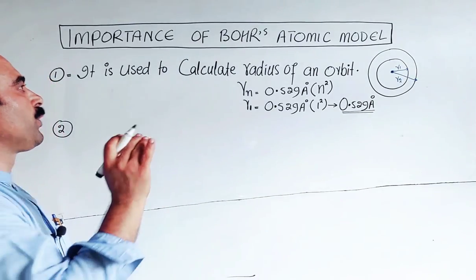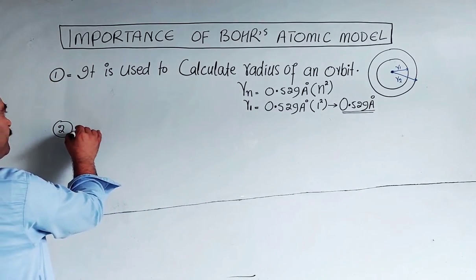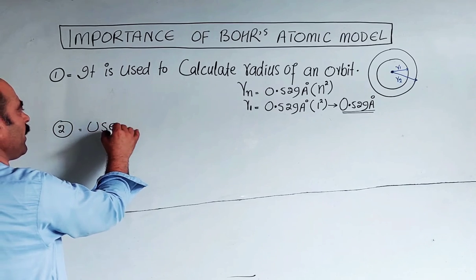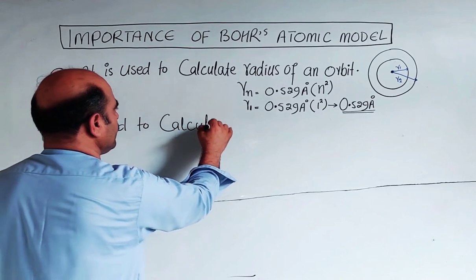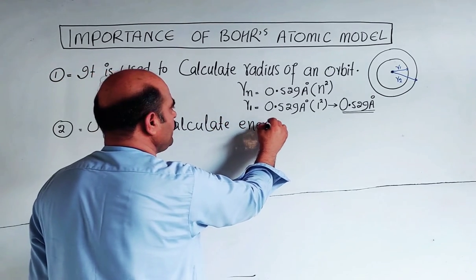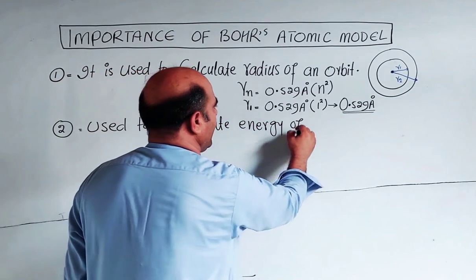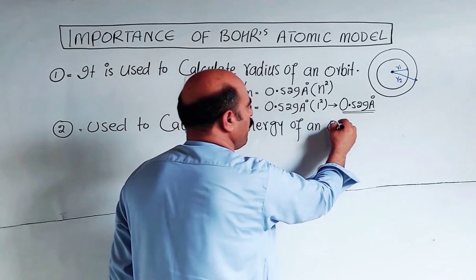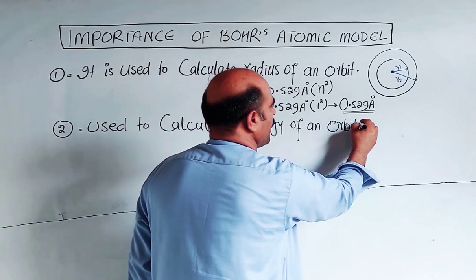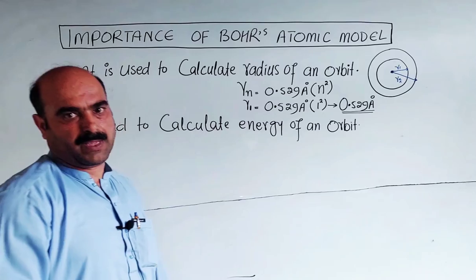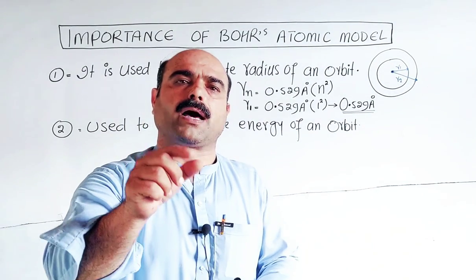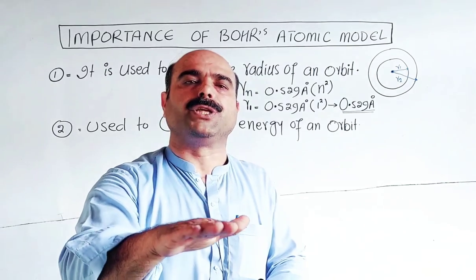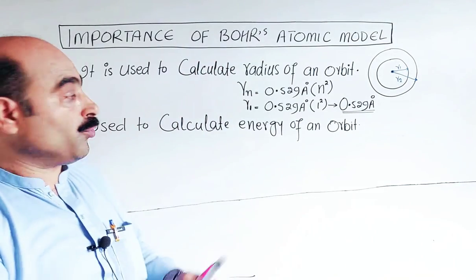Number two: It is used to calculate energy of an orbit. Bohr said that electrons don't have their own energy, but the orbit has fixed energy. When an electron is in an orbit, it has that orbit's energy.